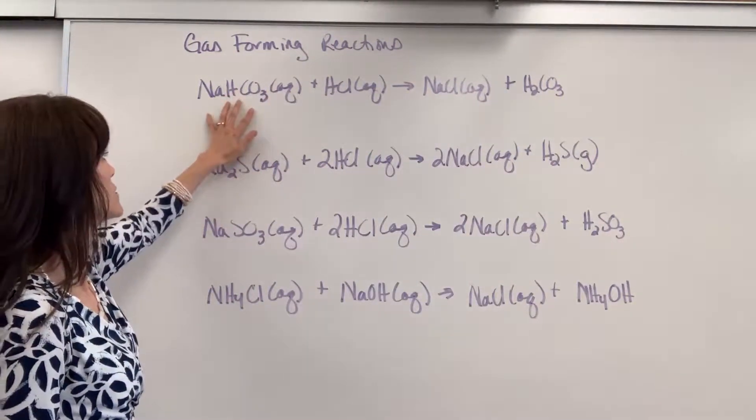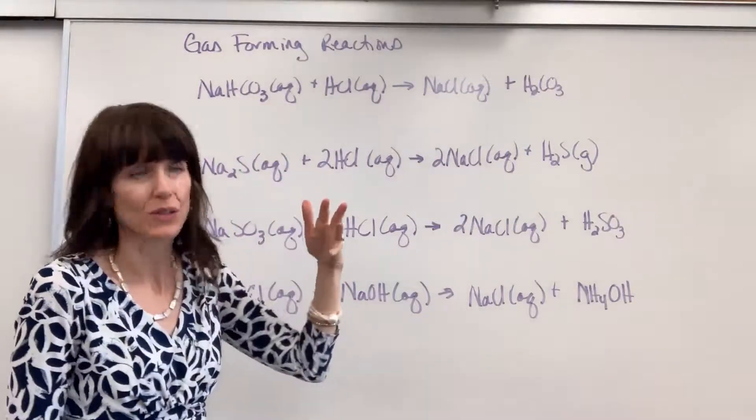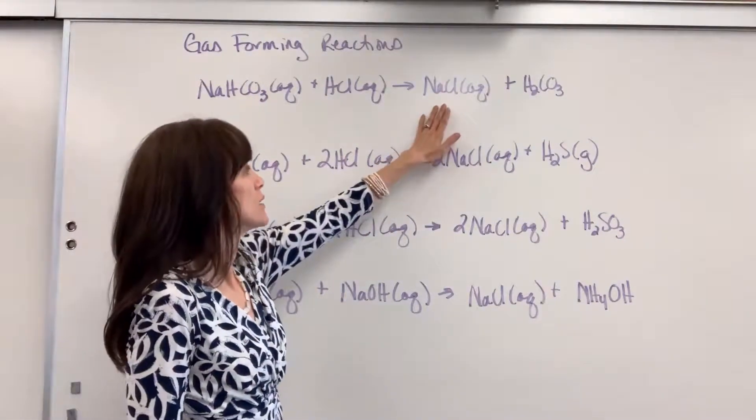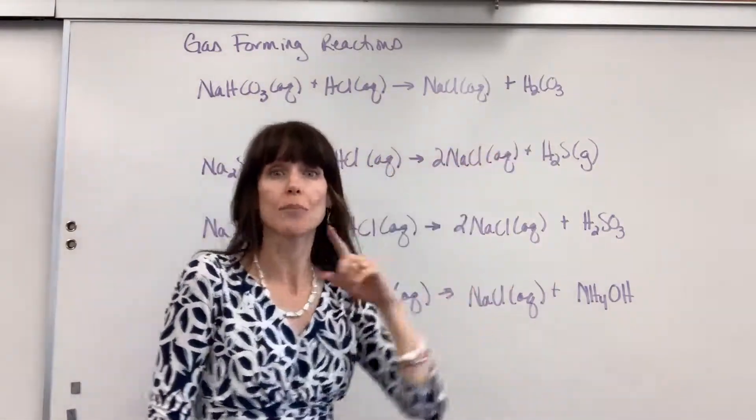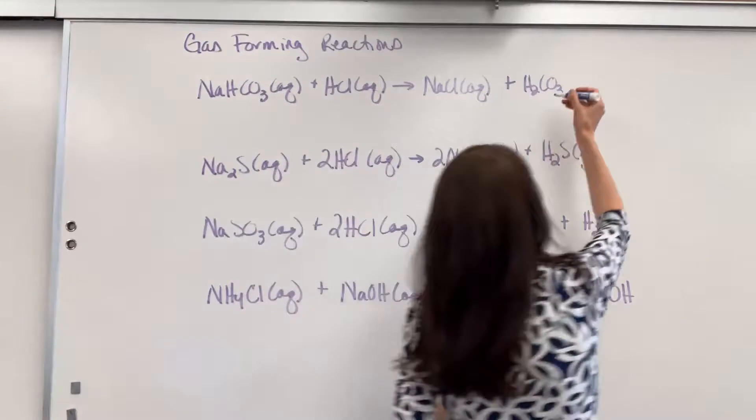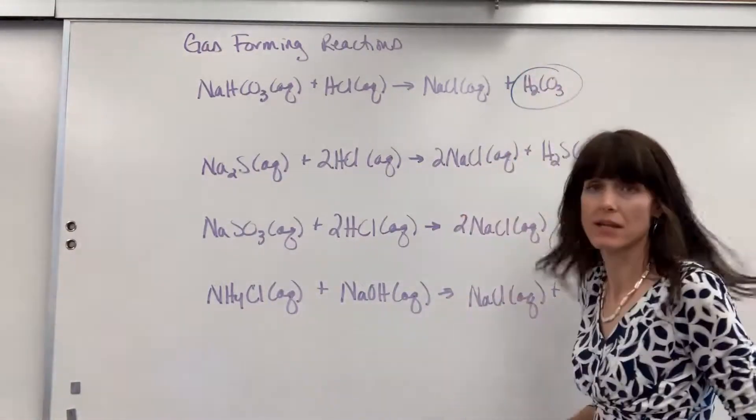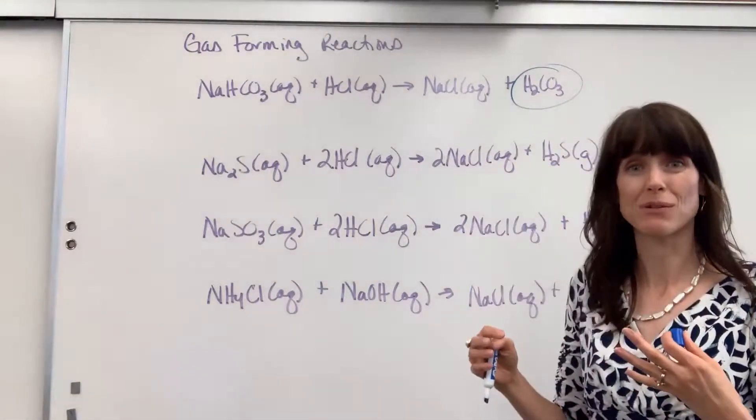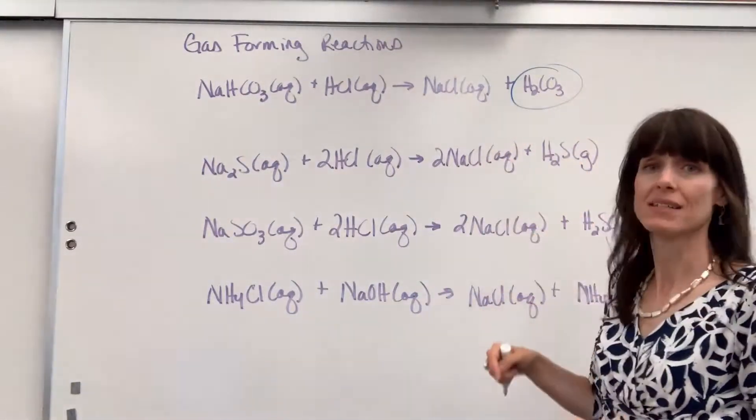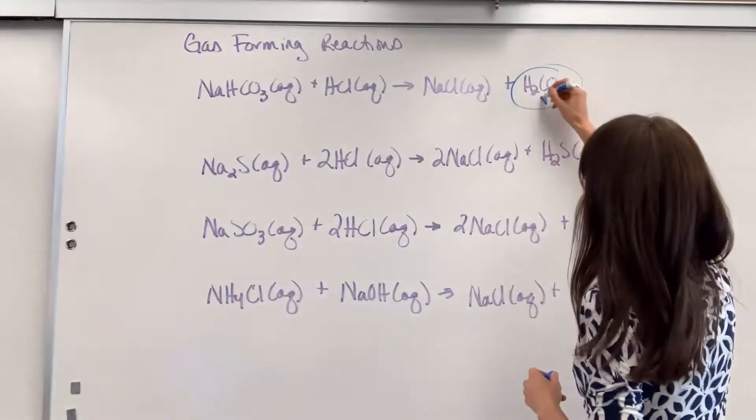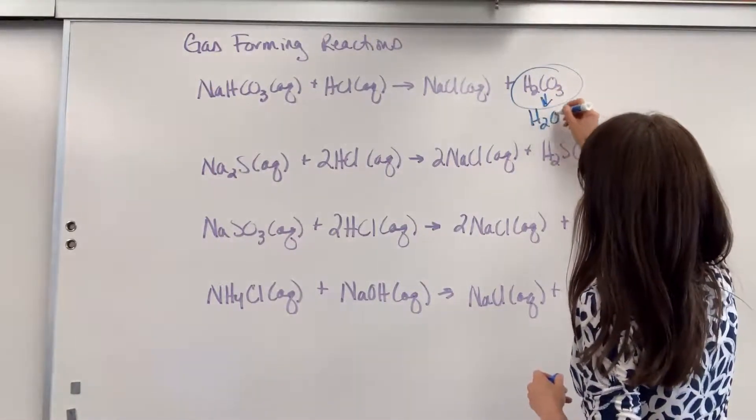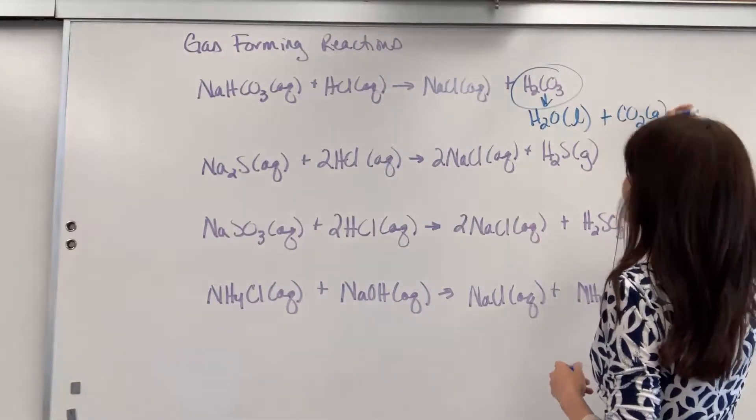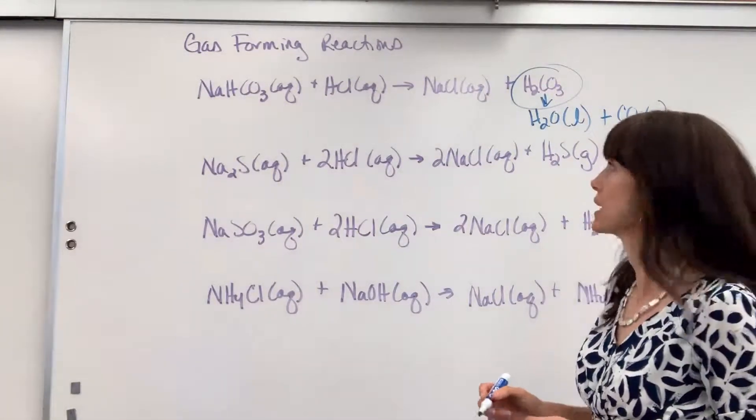So we have sodium hydrogen carbonate, also called sodium bicarbonate, plus hydrochloric acid. Do the double replacement yields sodium chloride and carbonic acid. This is what you want to have memorized. Anytime you have a product from that double replacement reaction, carbonic acid breaks into water, which of course is a liquid, and carbon dioxide gas.